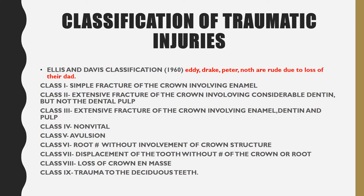Class 4 is when fracture of the tooth leads to the tooth becoming non-vital. Class 5 is avulsion — the complete displacement of the tooth out of the socket, which I'll cover in this video. Class 6 is root fracture that does not involve the crown.